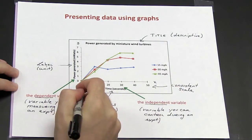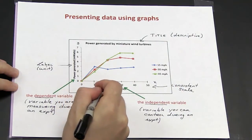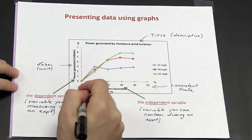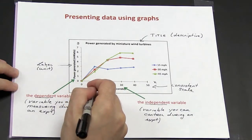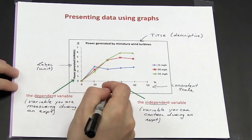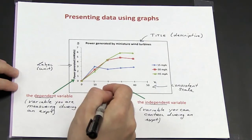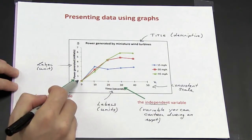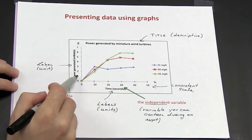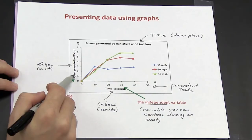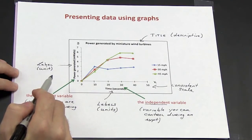If we look here, we see that every tick mark along the x-axis represents 10 seconds. From the origin to the first tick mark is 10 seconds, to the next tick mark is another 10 seconds, giving me 20. Along the y-axis we also have a consistent scale, with each tick representing 1 milliwatt of power.